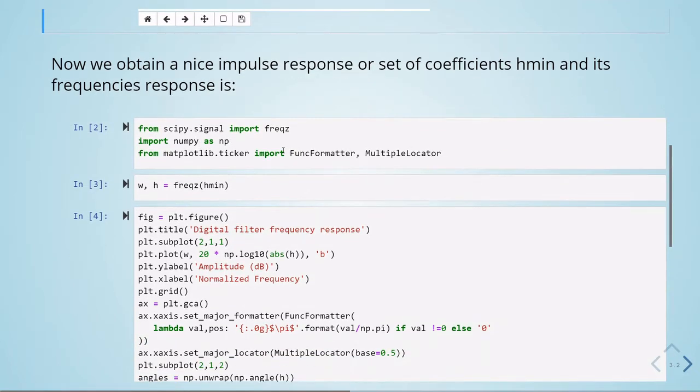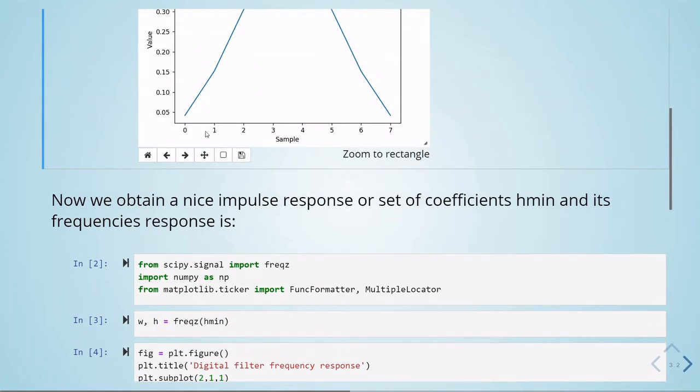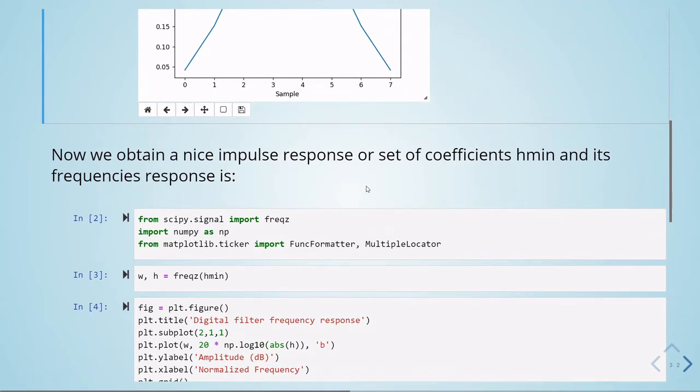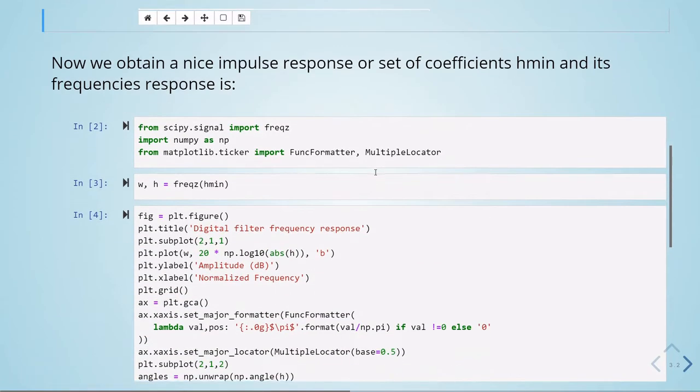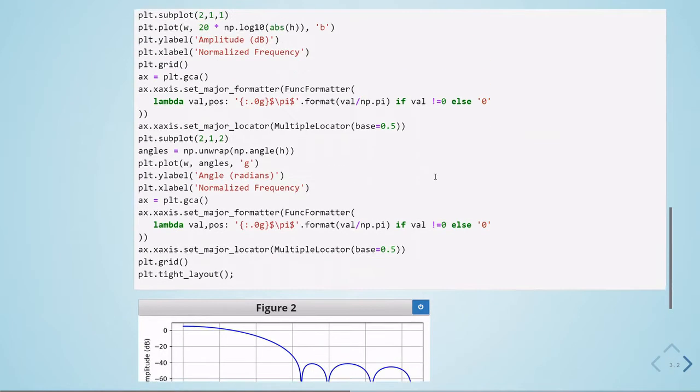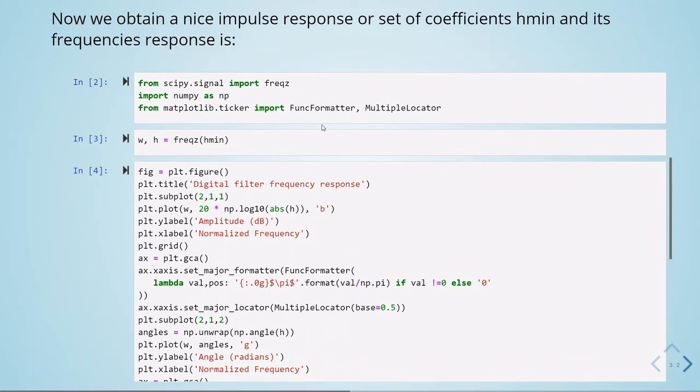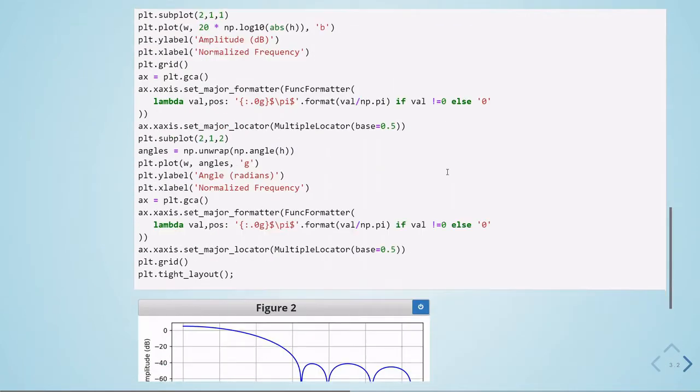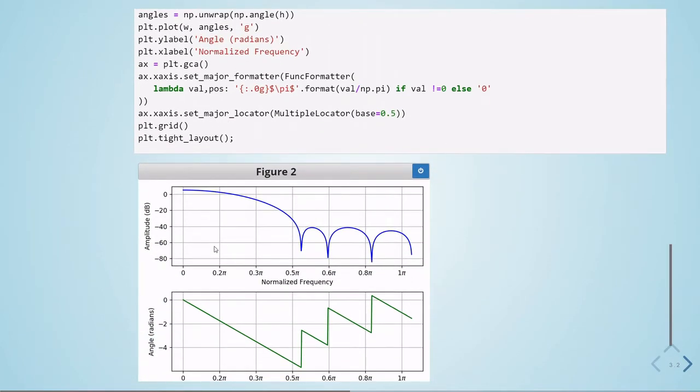This is just a nice trick in matplotlib, so that I want the values here in functions of pi, so when we plot something like this it will be here 3.14. But when we use this function formatter and multiple locator, we can set this axis as multiples of pi.